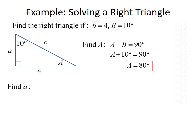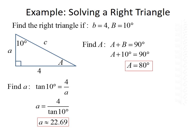Next, we want to find side a. When solving a right triangle, it's important to try to use the information that was given, because if you use information that you found, any rounding you did may cause errors. So we'll use the angle of 10 degrees and its opposite side of 4, and we're looking for the adjacent side, a. The trig function that uses opposite and adjacent is tangent, so tangent of 10 degrees equals 4 over a. Solving for a gives us a equals 4 divided by the tangent of 10 degrees, which is approximately 22.69.